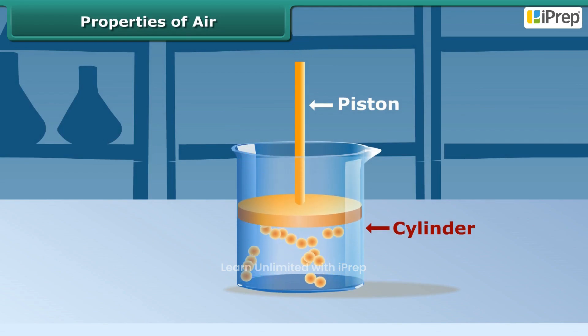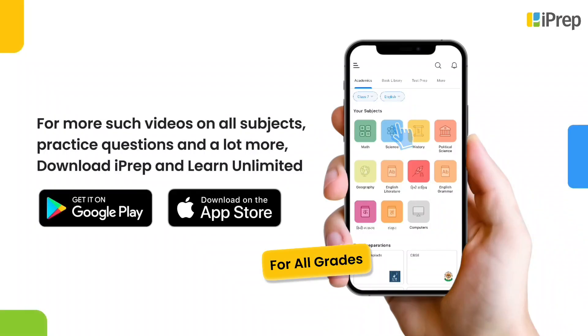Press the piston inward. You can compress the air inside the cylinder. So air can be compressed.